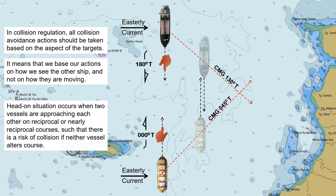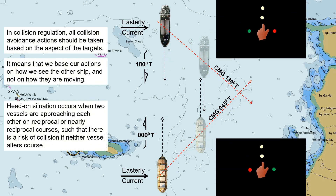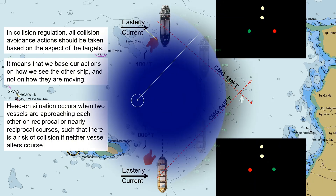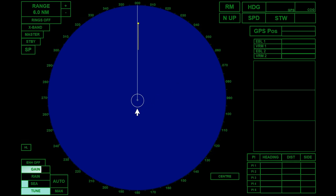Going back to the definition of head-on situation, it occurs when two vessels are approaching each other on reciprocal or nearly reciprocal courses, such that there is a risk of collision if neither vessel alters course. Both vessels will typically see each other's masthead lights aligned or nearly aligned and both side lights. The definition fits our scenario. Looking at the radar set to speed over ground, it will give us a false vector showing a crossing situation, displaying the course made good of both vessels. To handle this situation, we need to set our radar to speed through water, because the displayed vector for each vessel will be based on their movement relative to the water. In this case, our ship would appear to be moving due north, while the other vessel would be moving due south, reflecting their true headings without the influence of external forces like currents.